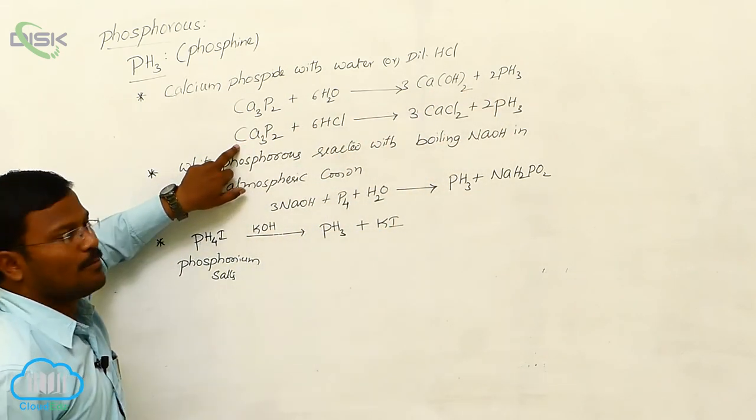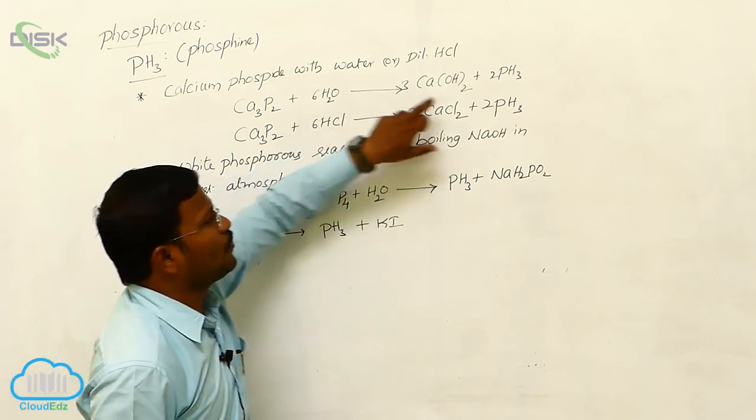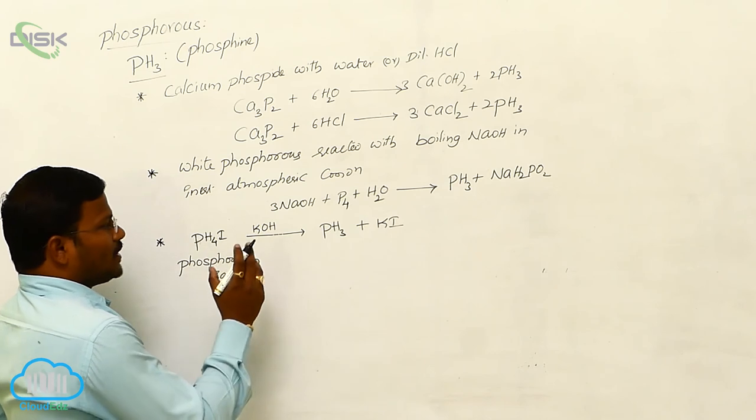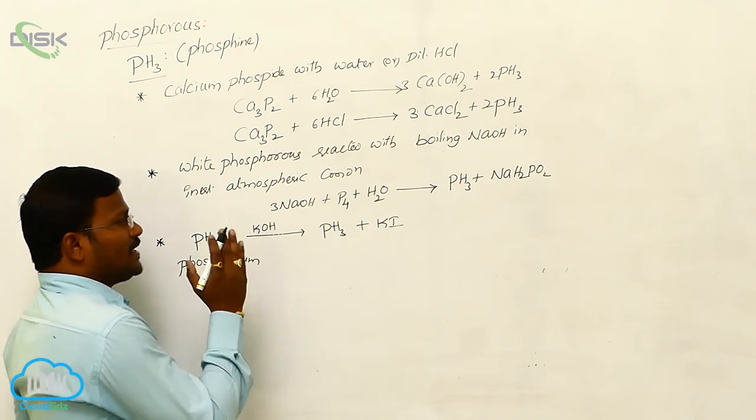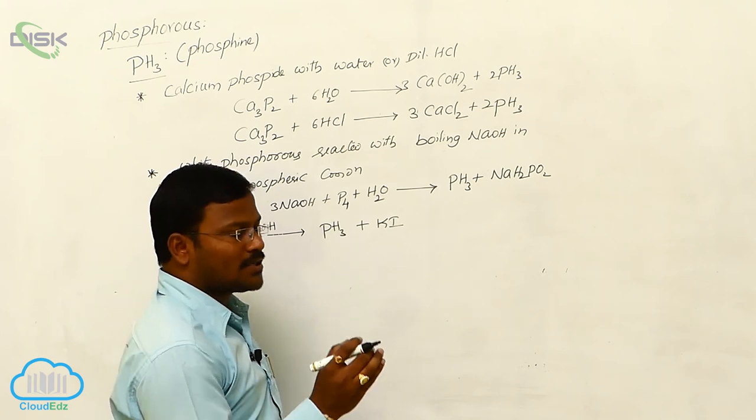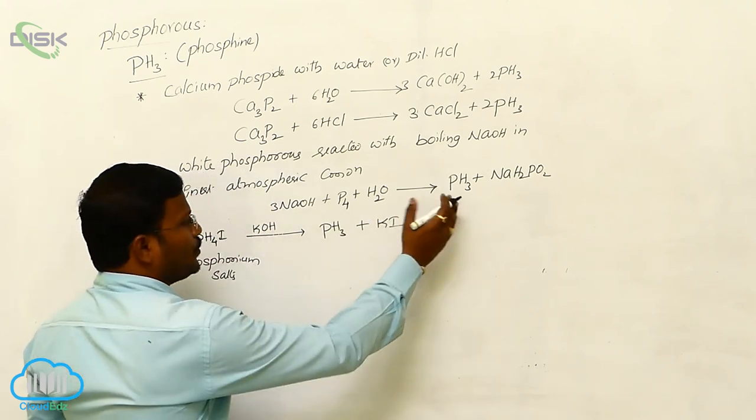Or the same calcium phosphide when reacted with HCl produces the same phosphine. Next, the convenient method in the laboratory is produced from white phosphorus. When white phosphorus reacts with boiling sodium hydroxide it produces phosphine.